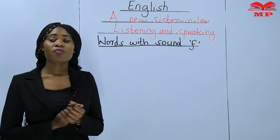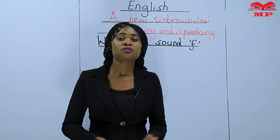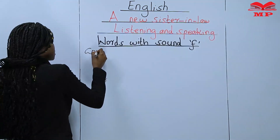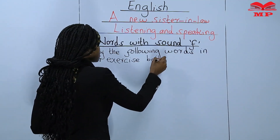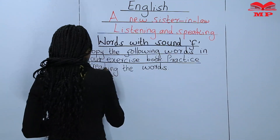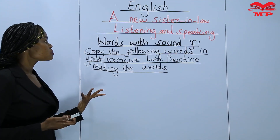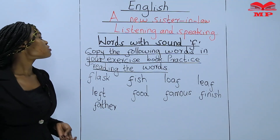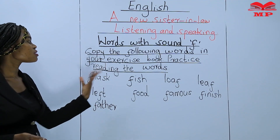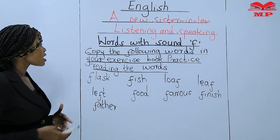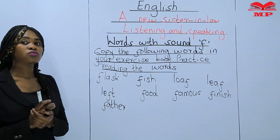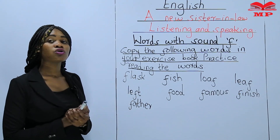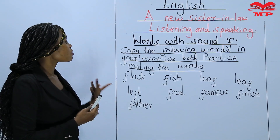Now, I left you with some work during the previous lesson. I want us to go through the work first before we do the next bit of it. The instructions were: copy the following words in your exercise book and also practice reading the words. So these are the words which you are supposed to practice reading after you've copied them in your exercise book. I want us to go through the words together — maybe there is a word you are not able to read, so you will be able to get the correct way in which the word is read.